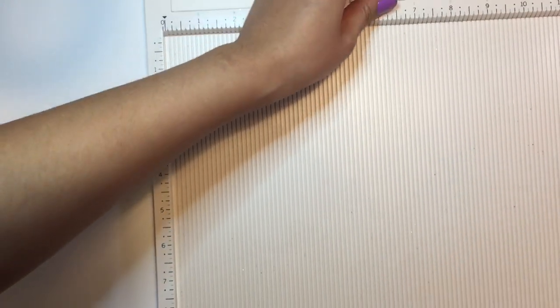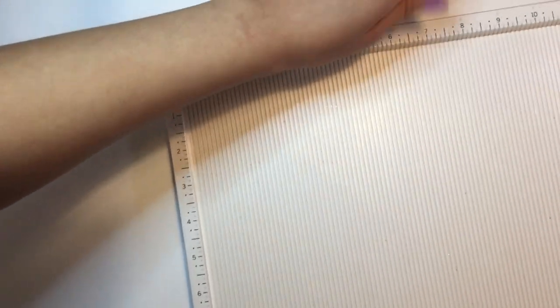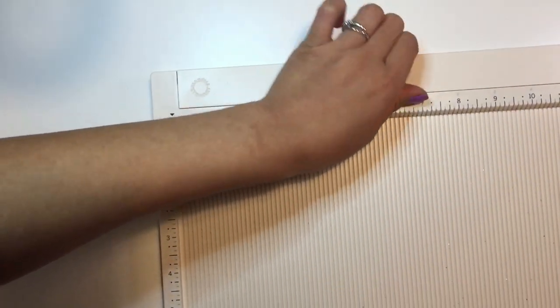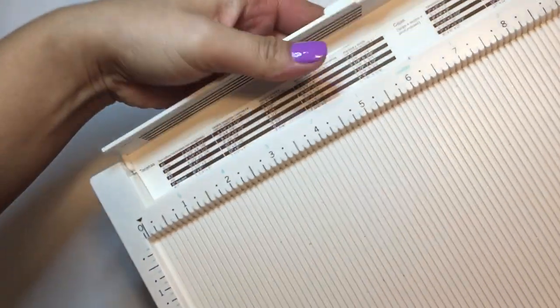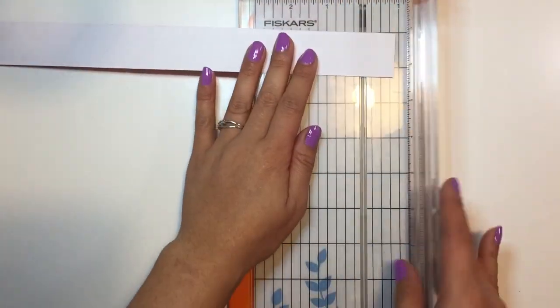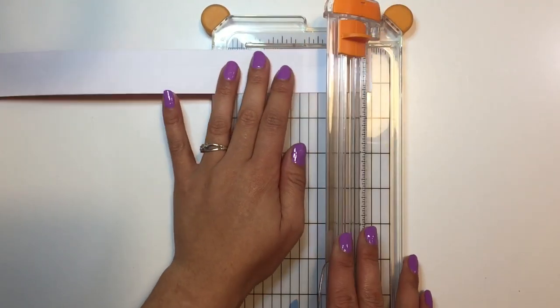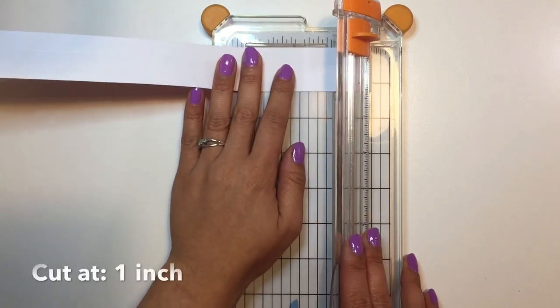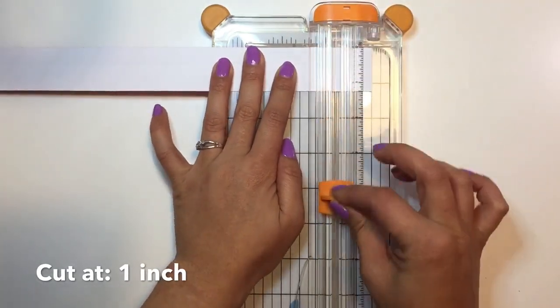Okay, so you're going to need to do that, and then you're going to need your cutting board again. And then you're going to need to cut at one inch. Like I said, I use a 12 by 12 piece of paper, so I got exactly 12 little envelopes out of this.